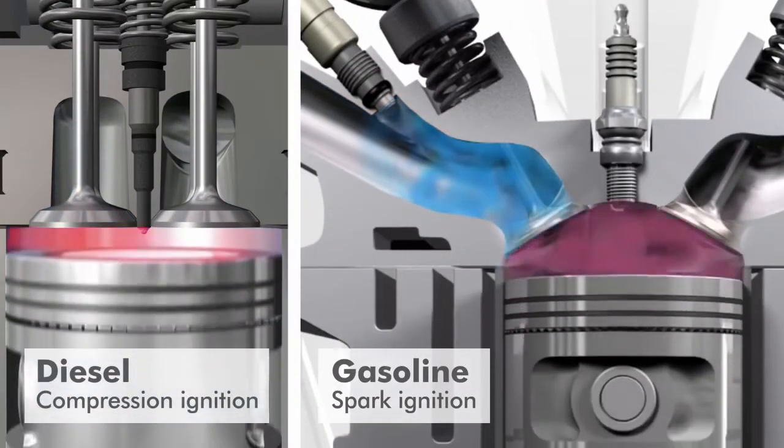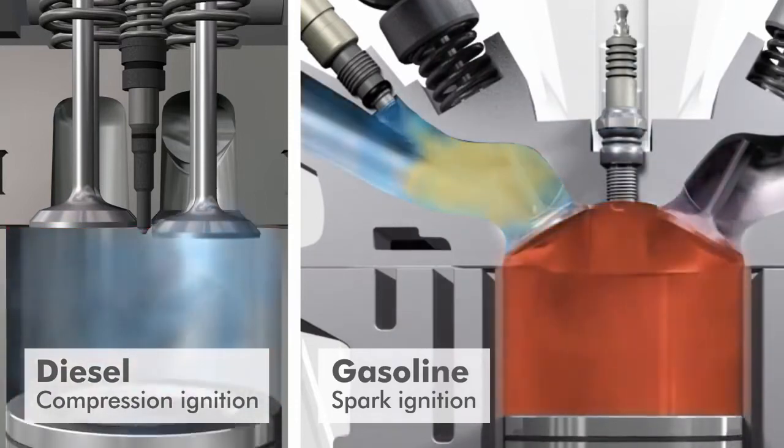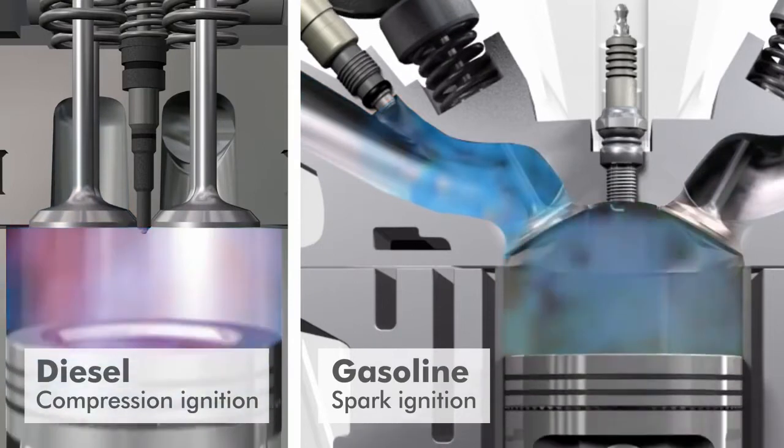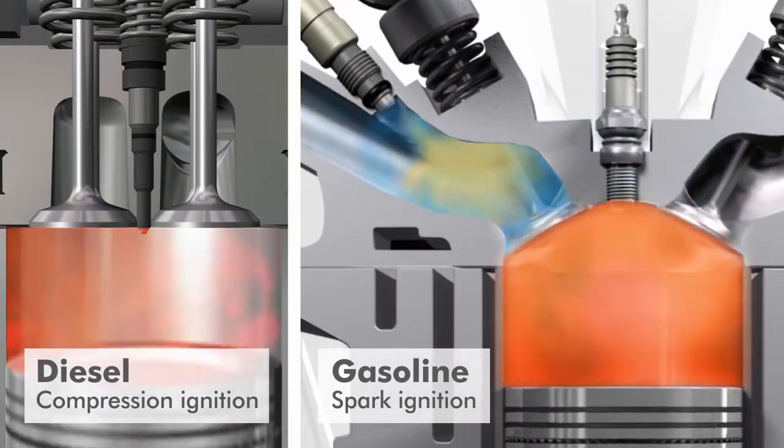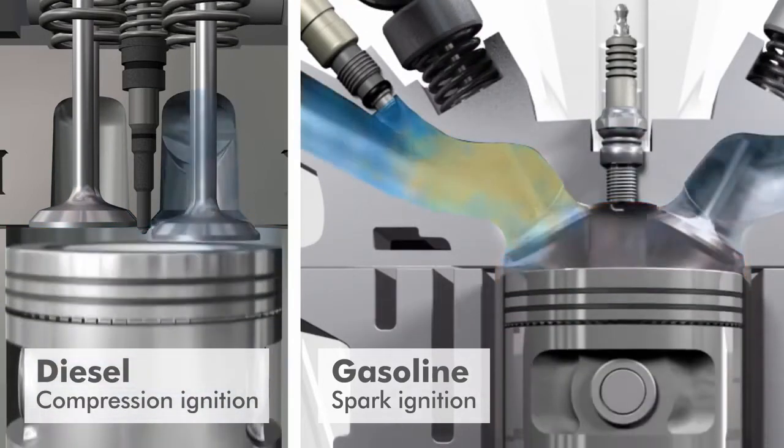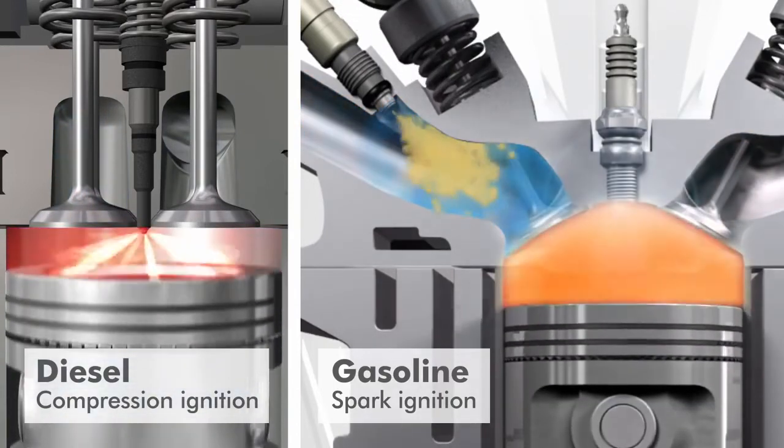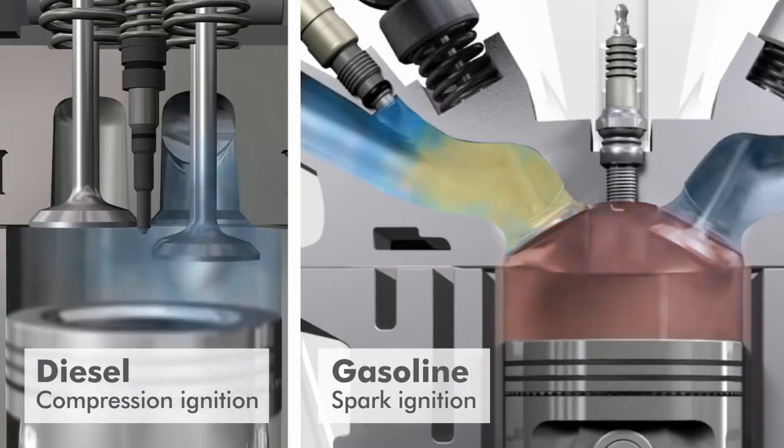In conventional gasoline engines, a mixture of fuel and air is drawn into the cylinder, compressed by the motion of the piston and ignited by a spark as the piston nears the top of the cylinder. The resulting combustion generates pressure which forces the piston down to power the vehicle.